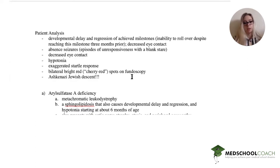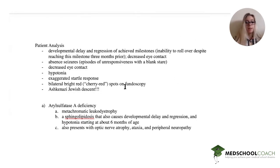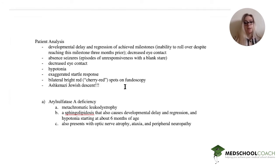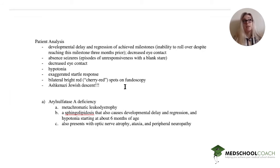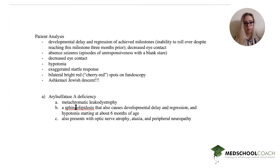Starting with the first option: aryl sulfatase A deficiency causes metachromatic leukodystrophy. It can cause developmental delay, regression, and hypotonia starting at six months of age, and it presents with optic nerve atrophy, ataxia, and peripheral neuropathy — which are not present in our patient. We do have cherry red spots, which are not present in metachromatic leukodystrophy, as well as the startle response. So it can't be A.